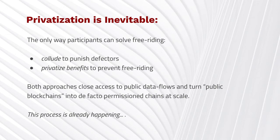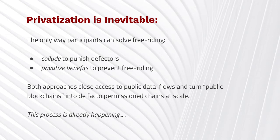There are two ways you can solve free riding. The first is you can collude to punish defectors. The second is you can privatize the benefits. Importantly, both of these close access to data flows on the network. If you've only got a small number of miners or block producers, they can team up and start policing other participants. But if you're doing that, you are by de facto running a permissioned chain, and by definition you can only have a small number of actors — because as soon as you have a large number, you can't collude.